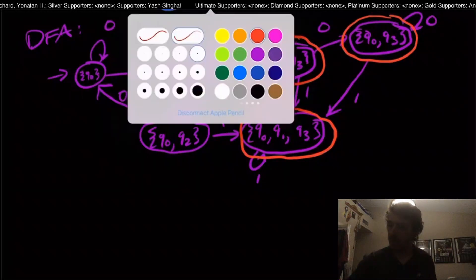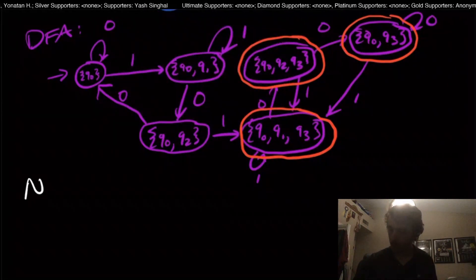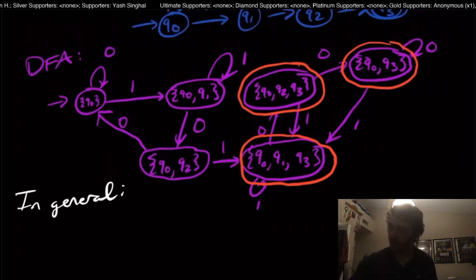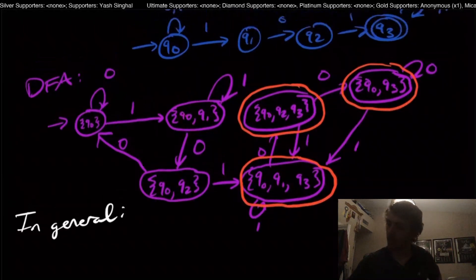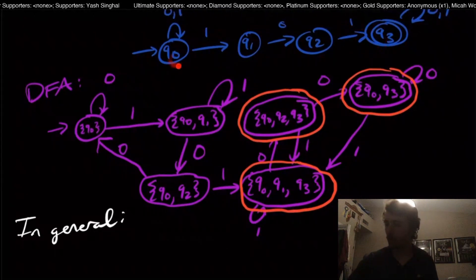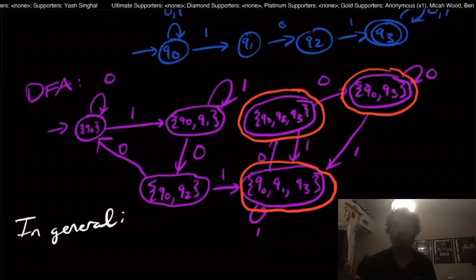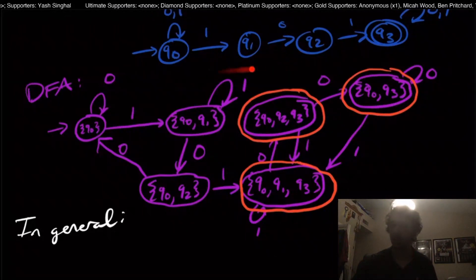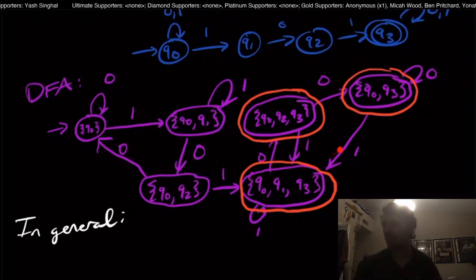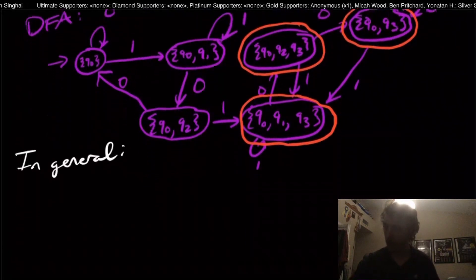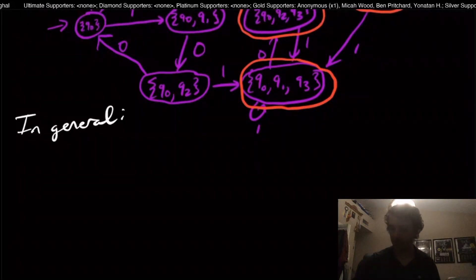So how does this work in general? Notice that we have sets of states here, and we have four states in the NFA. In general, we could have all 2^4, or 16, different possible subsets of states. In this case we only had six, so the other ten subsets are just not possible to ever generate. But in general, we could have all 2^n possible subsets.